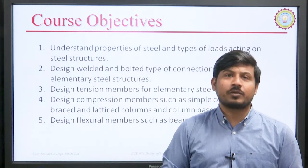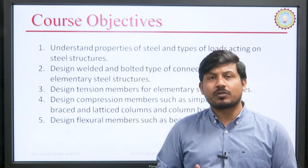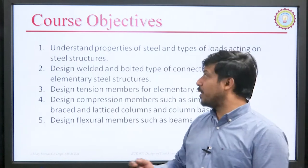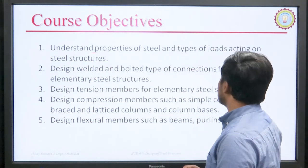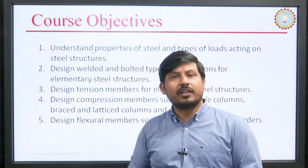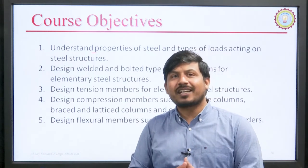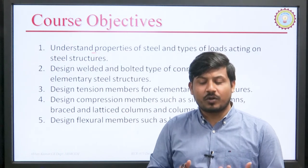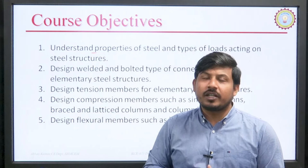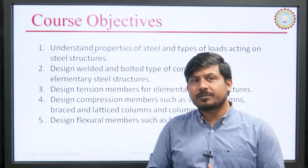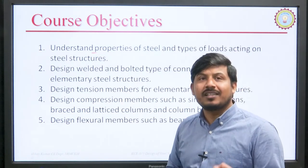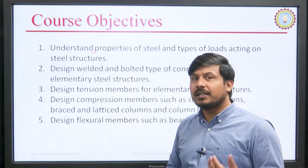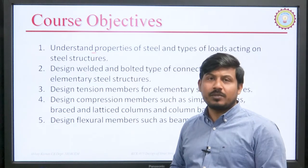Now let us look at the course objectives — what students will be able to perform by the end of this course. Students will be able to: understand the properties of steel and types of loads acting on steel structures (Unit 1); design welded and bolted connections for elementary steel structures (Unit 2); design tension members for elementary steel structures (Unit 3); design compression members such as simple columns, braced and latticed columns, and column bases (Unit 4); and design flexure members such as beams, purlins, and girders (Unit 5).